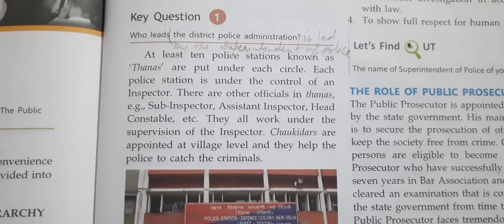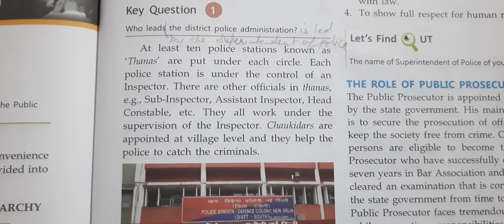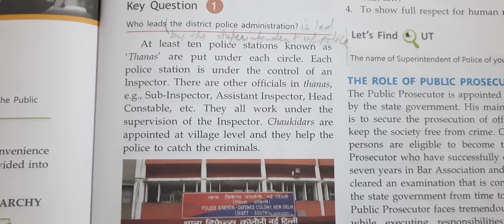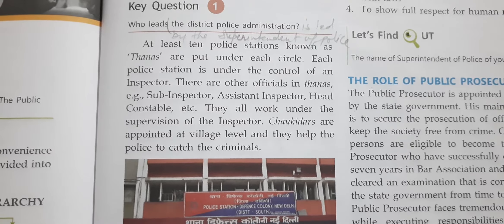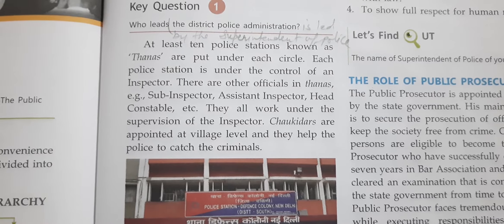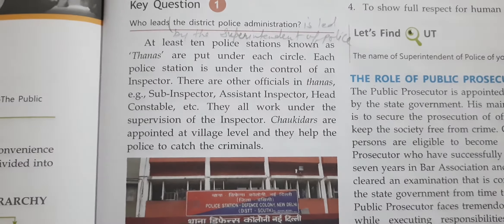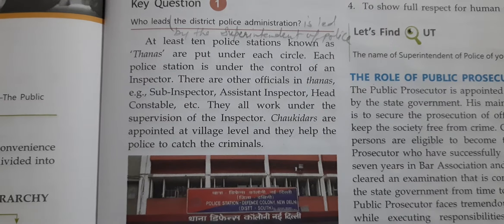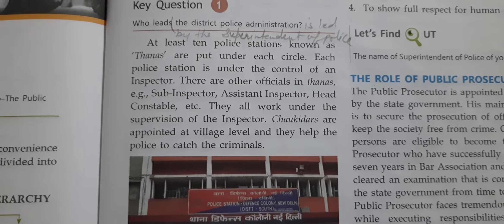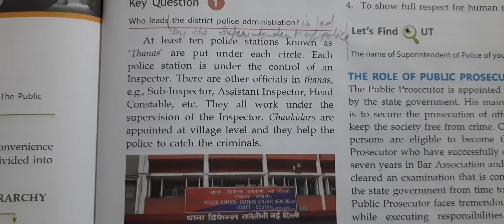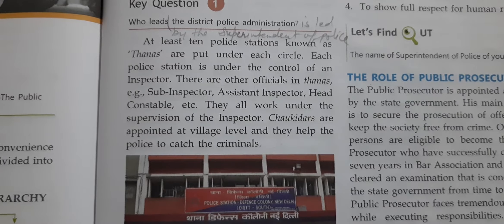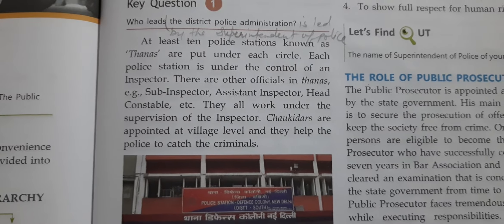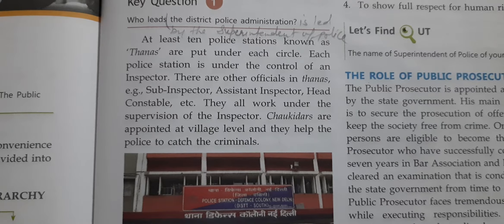At least 10 police stations known as THANAs are put under each circle. Each police station is under the control of an Inspector. There are other officials in THANAs such as Sub Inspector, Assistant Inspector, Head Constable, etc. They all work under the supervision of the Inspector. The Chaukidars are appointed at village level and they help the police to catch the criminals.